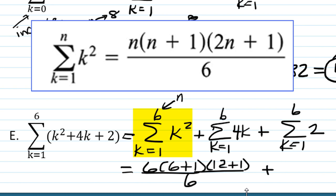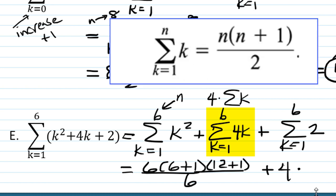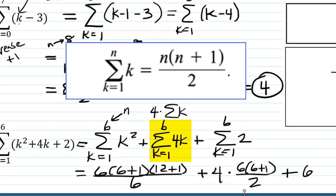And then plus, in the second term, we're going to think of it as 4 times the sum of the k's. So we're going to have 4 times, and we're going to use the other formula, n times n plus 1 over 2. So 6 times 6 plus 1 over 2 plus we have a sum from 1 to 6 of the constant 2, which is going to be 6 times 2.